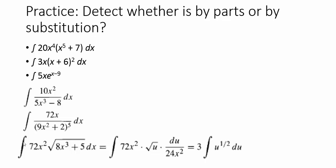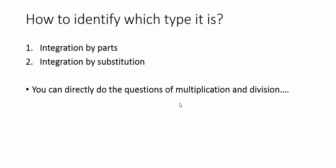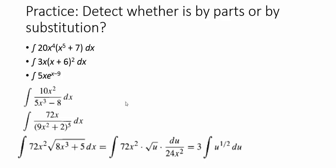For the last three questions you are stuck because you cannot do anything when something is in the denominator. So remember that when something is in the numerator and denominator you think along those lines. On the last question you can see how putting 8x cubed plus 5 as u means that 72x squared automatically becomes du, making it a very nice and easy integration.